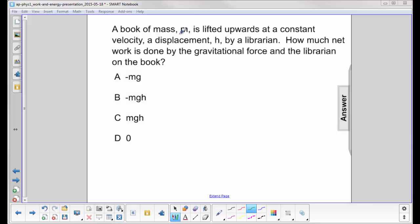A book of mass m is lifted upward at a constant velocity, a displacement h. What they're not telling us explicitly is what the acceleration is, but if you have a constant velocity, your acceleration will equal zero.